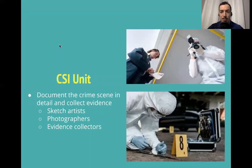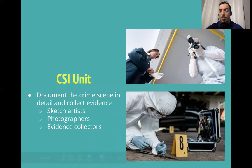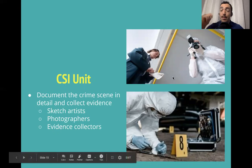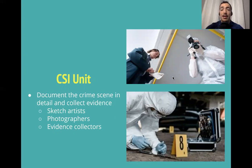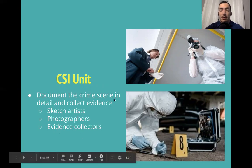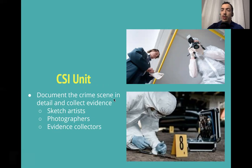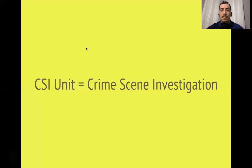The next people to show up are the CSI unit — crime scene investigation. Their job is to document the crime scene in detail and collect evidence. They're going to take photos of all the evidence and put down numbered markers around it, and collect any clues they can. In this unit could be sketch artists who draw a diagram of the crime scene so they can look back at it, photographers, and evidence collectors.